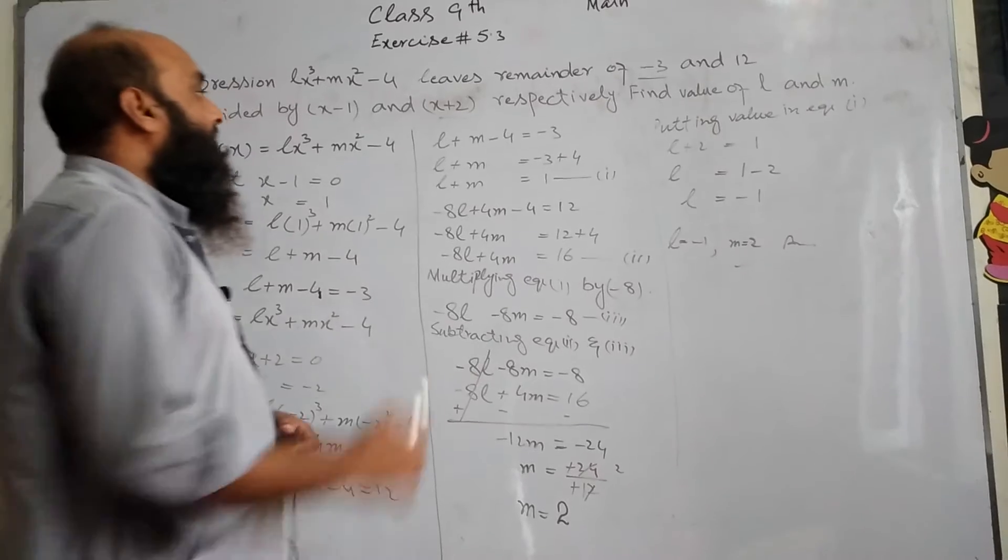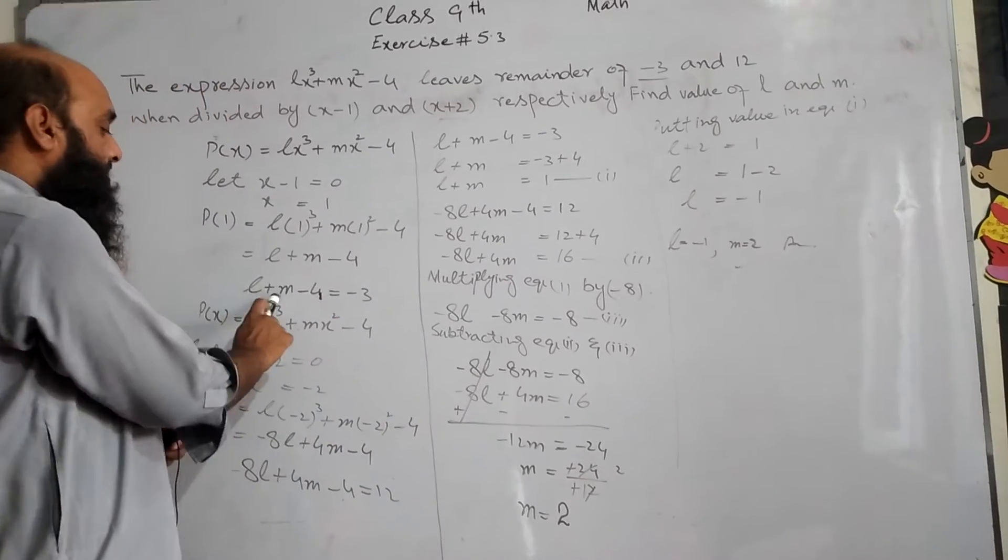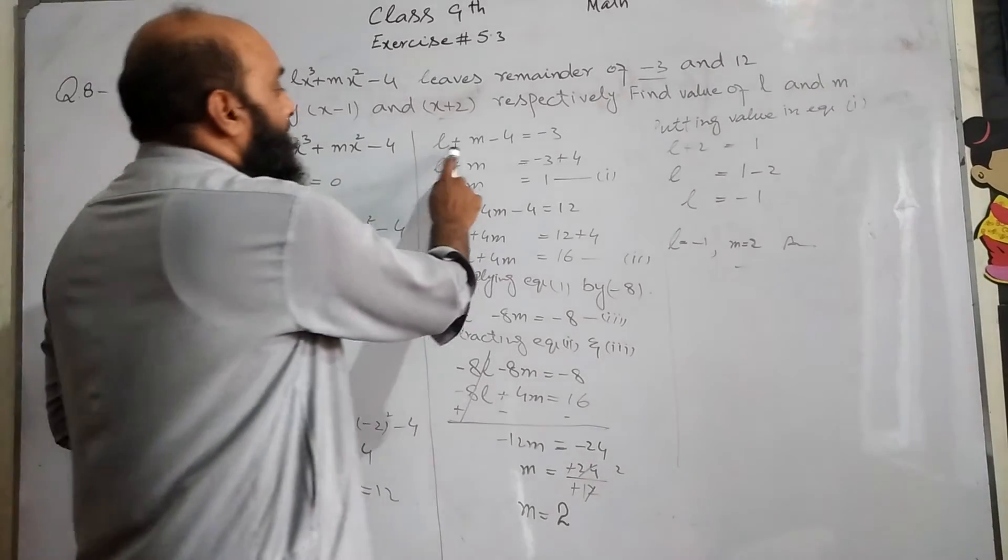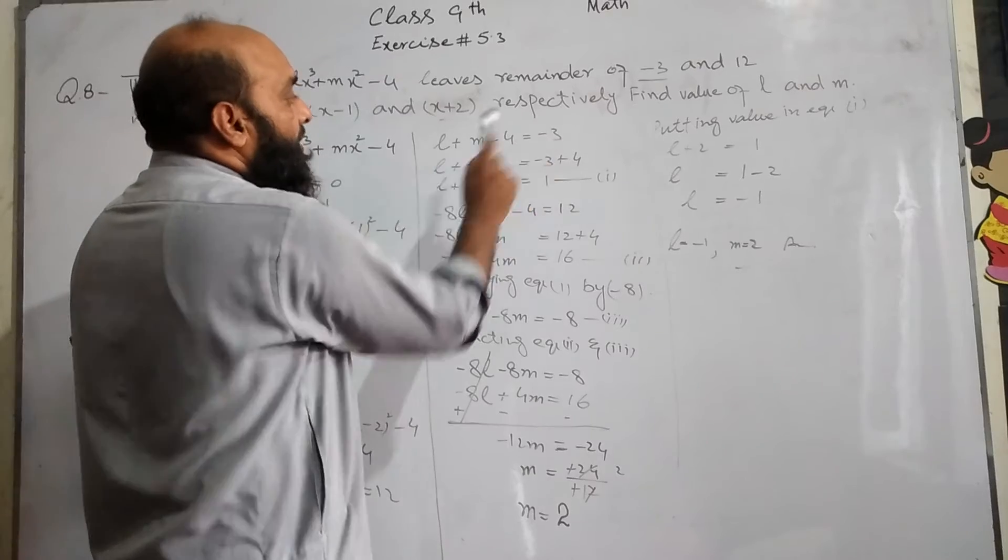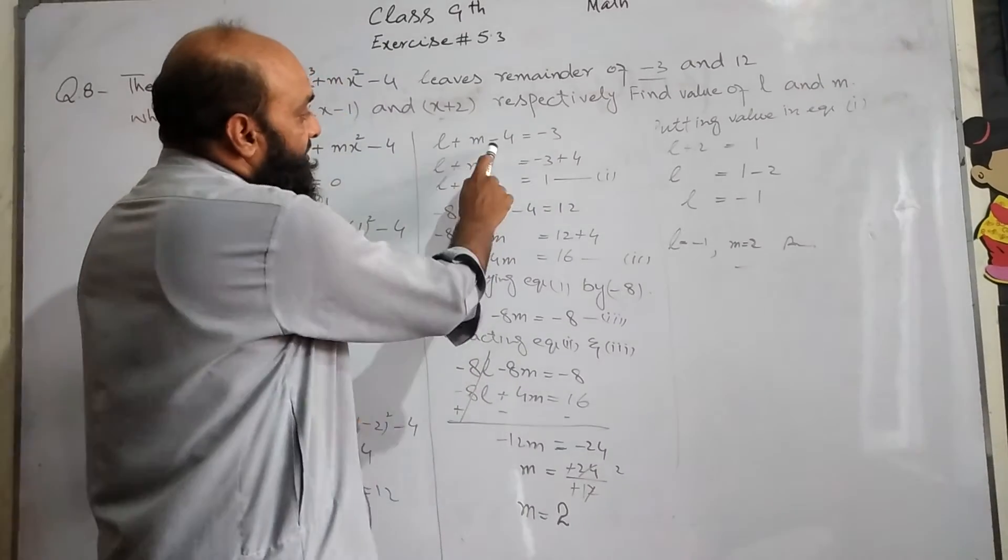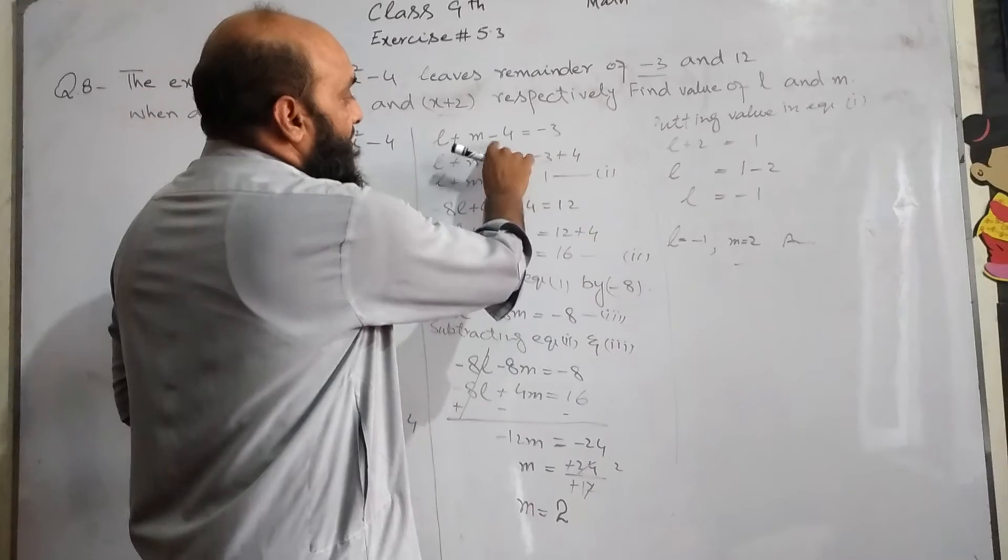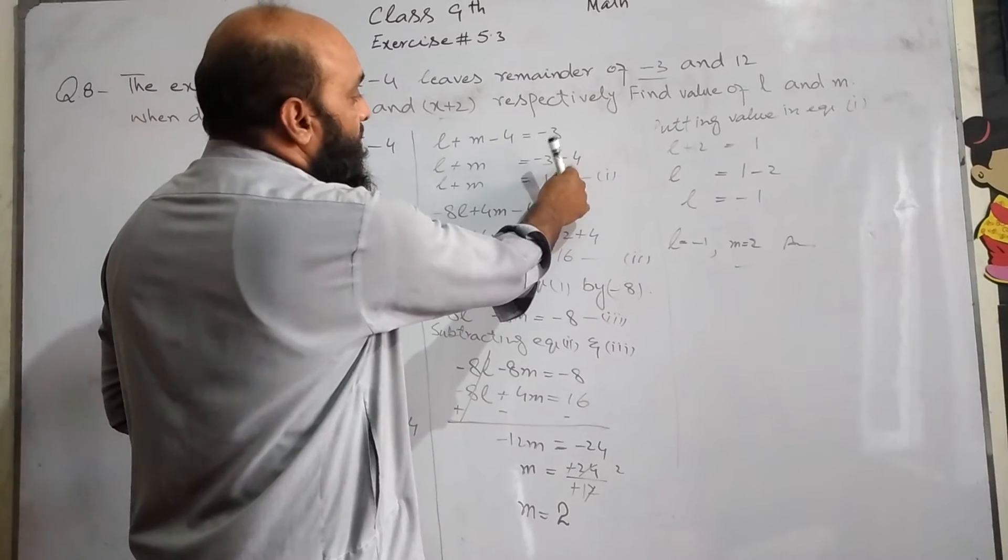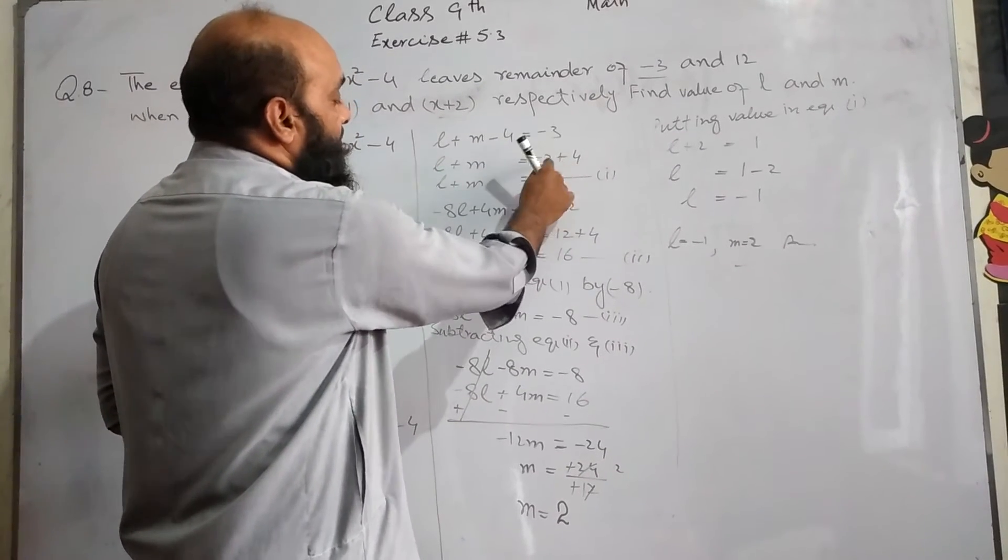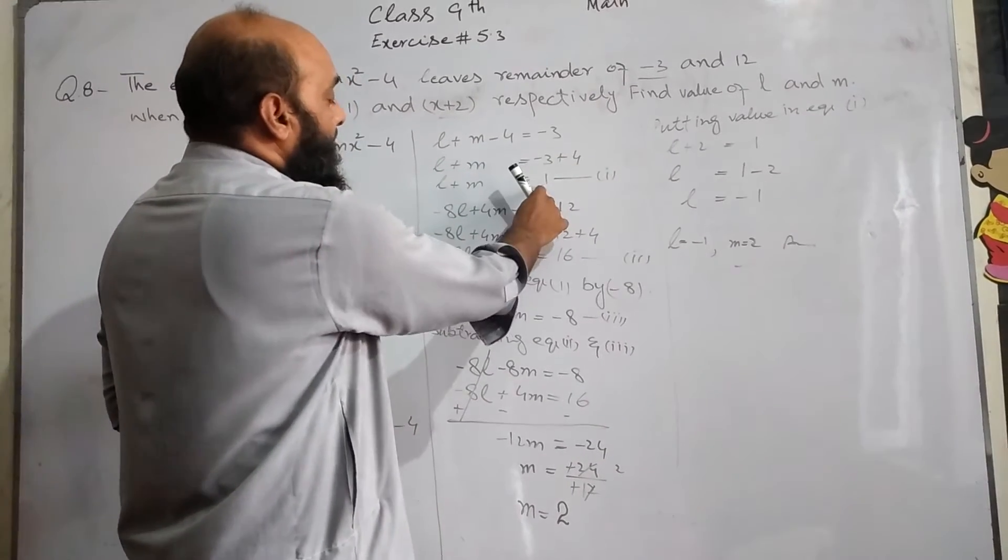Next we can see that l plus m minus 4 is equal to -3. L plus m minus 4 is equal to -3. So here, minus 4 if we take to the other side, it becomes plus 4. Then l plus m equals 1. This is equation 1.